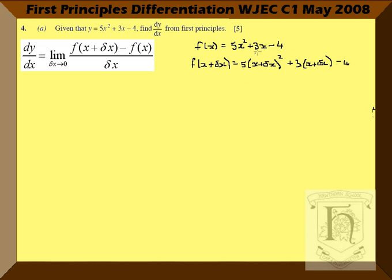Now we're going to expand that bracket. You might need separate working to show the squaring of (x + δx), but to save time, it's x² + 2x·δx + (δx)² and we've got the 3(x + δx). Expanding the brackets on the next line gives us 5x² + 10x·δx + 5(δx)² + 3x + 3δx - 4.